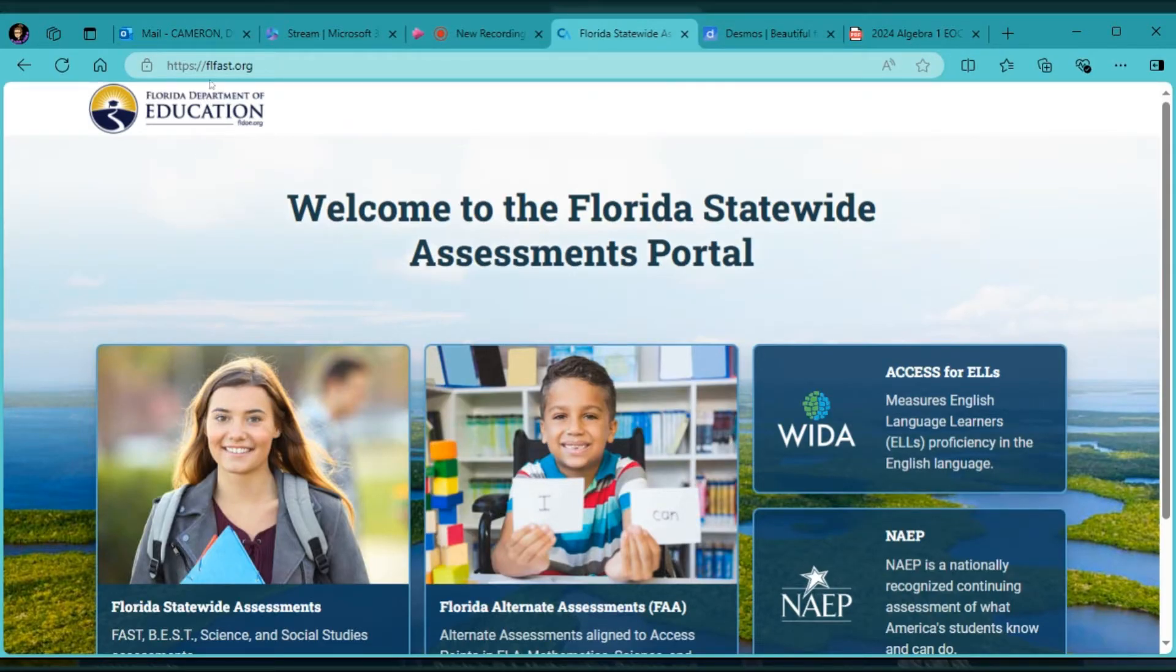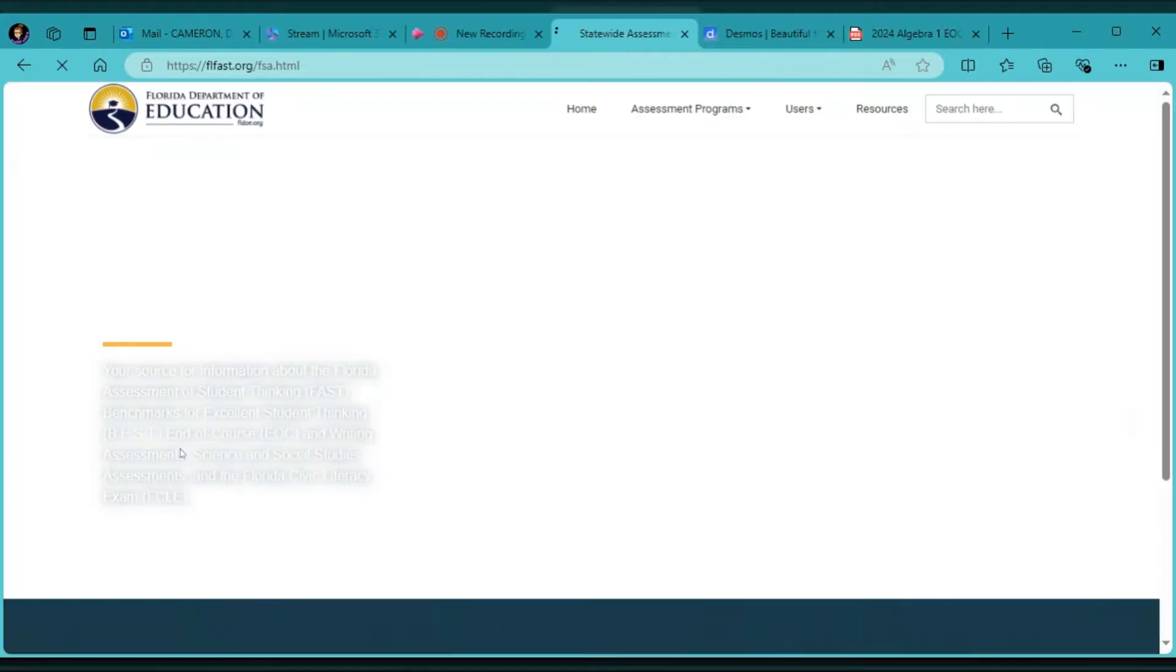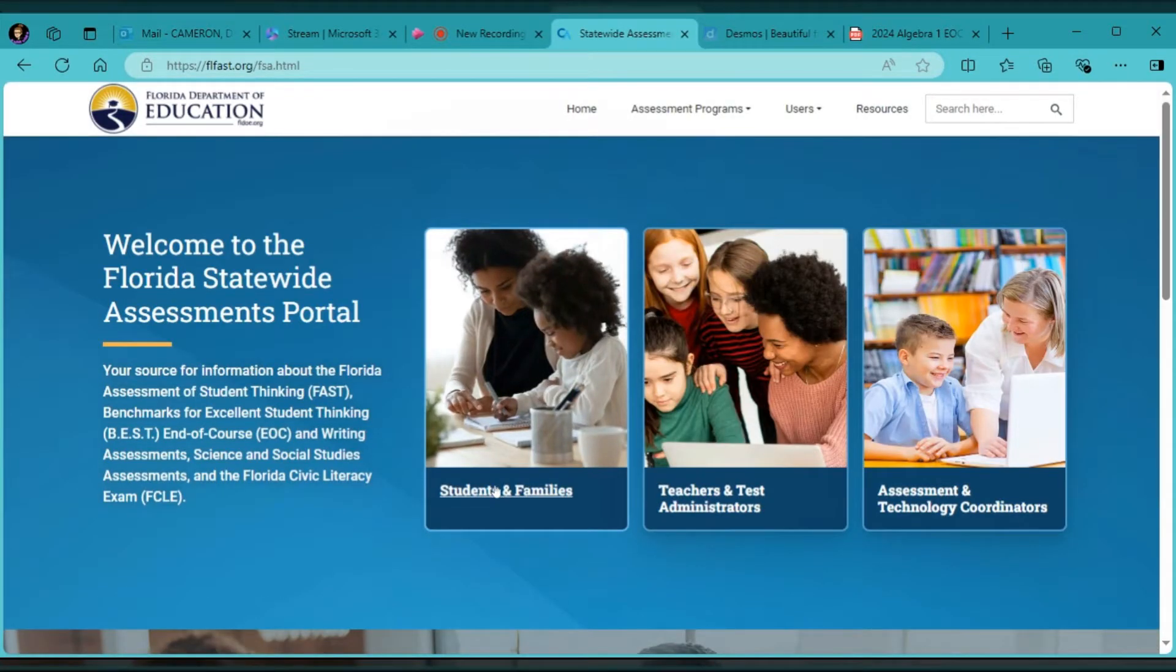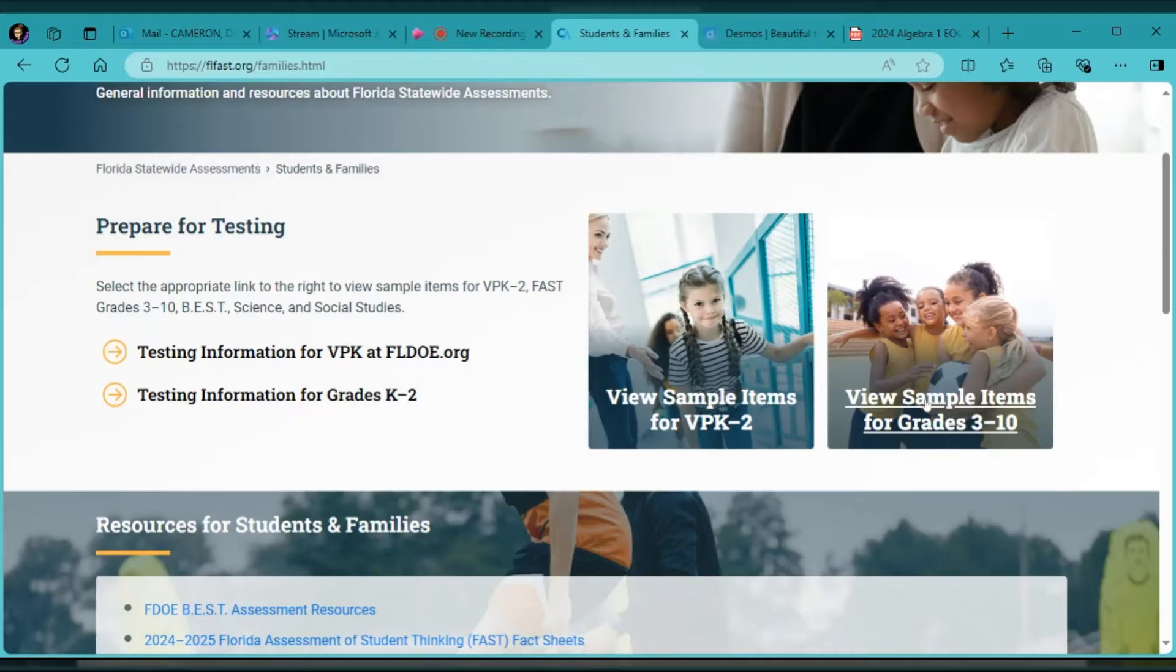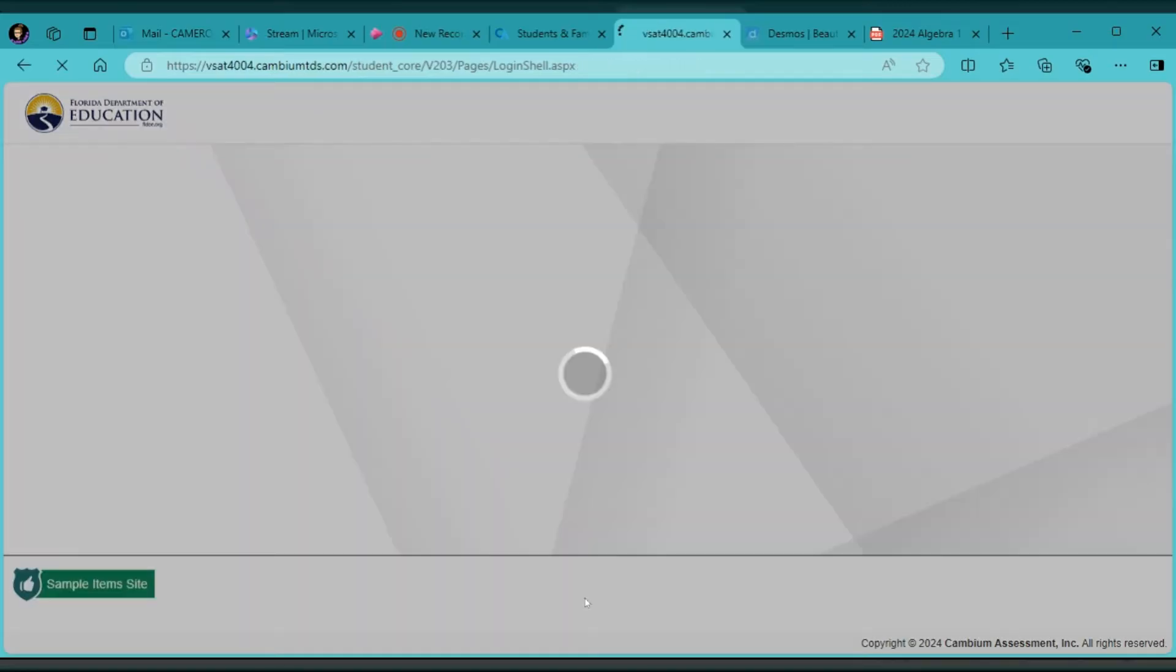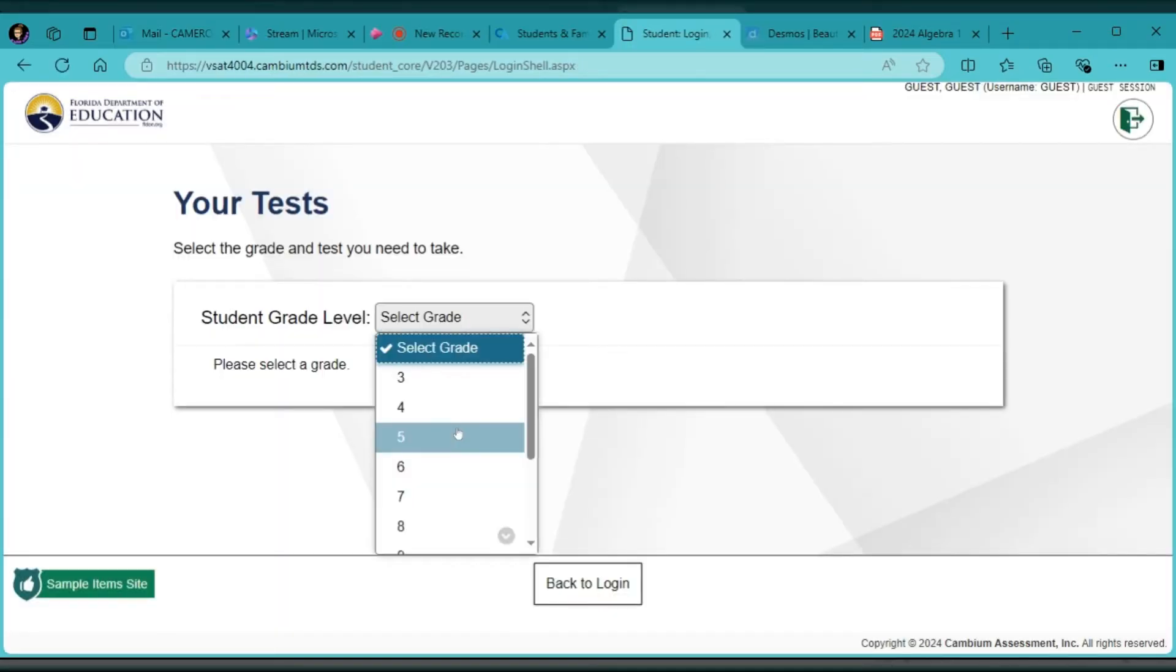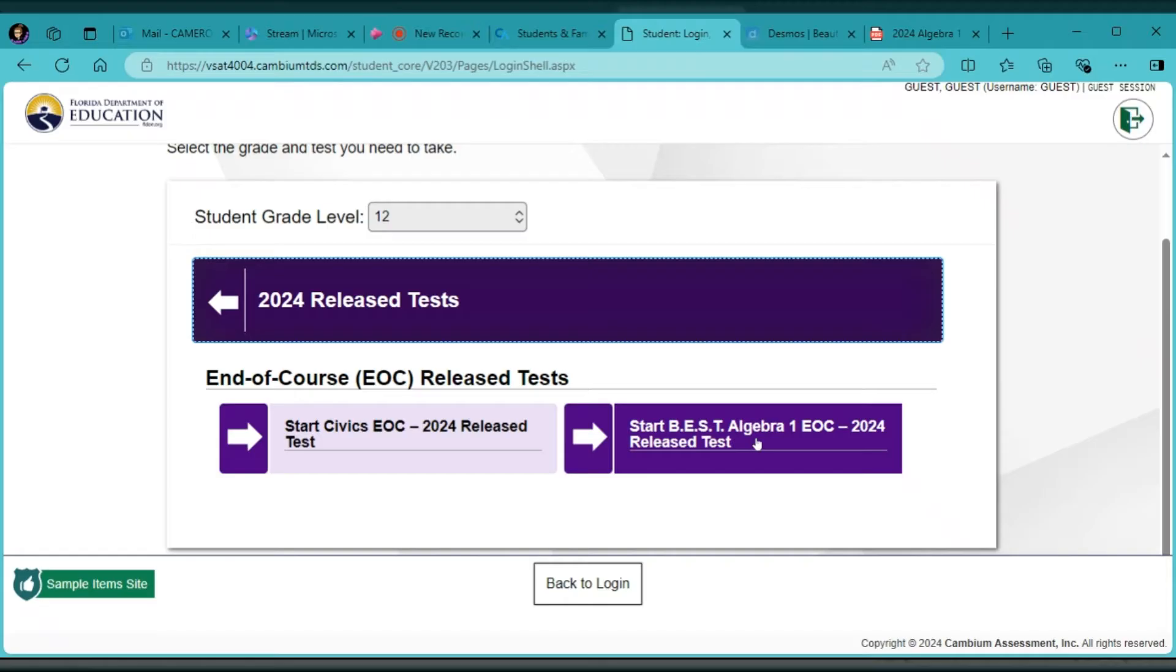If you go to FLFAST.org and click on Florida Statewide Assessments, students and families, view sample items for grades 3 to 10, sign in as a guest. I'm working with students taking retakes in 11th and 12th grade, so I'm going to say 12th grade and you come down here, 2024 released tests. We're going to take a look here at the Algebra 1 EOC released test.